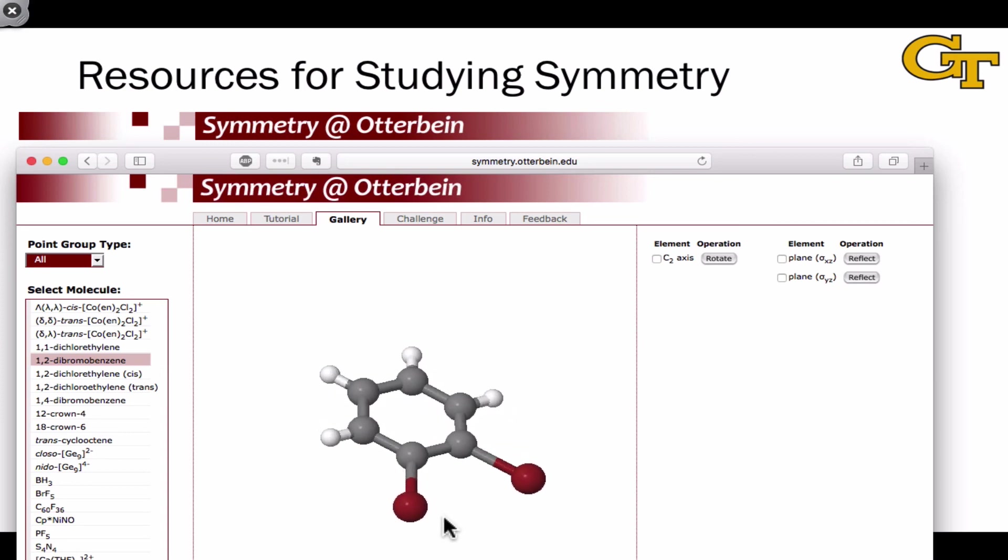For example, if we click the molecule 1,2-dibromobenzene, its symmetry elements appear automatically on the right-hand side, and as we can in the tutorial, we can check a box next to each one to display it, and then click the button next to the symmetry operation to actually run it, to see how the atoms move.